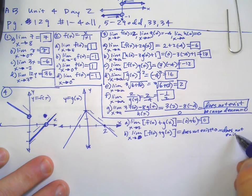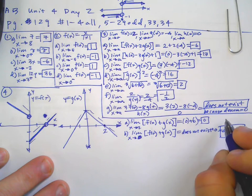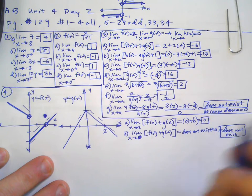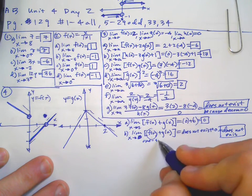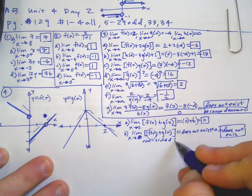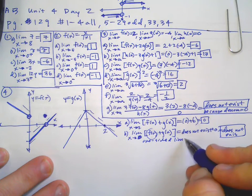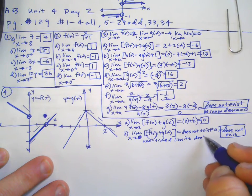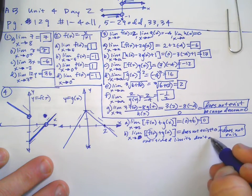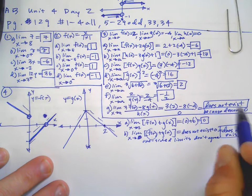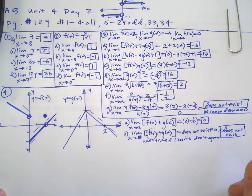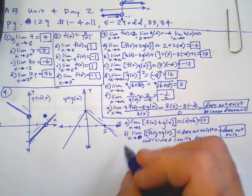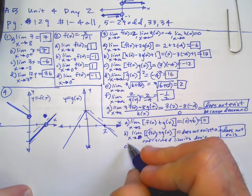The reason is that for this function, the one-sided limits don't agree — they're different. That's different from the does not exist on the previous problem, which was division by zero.